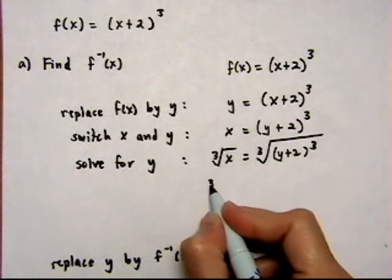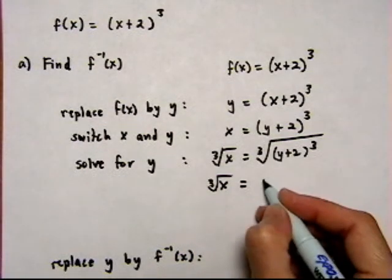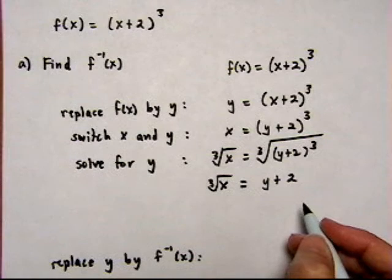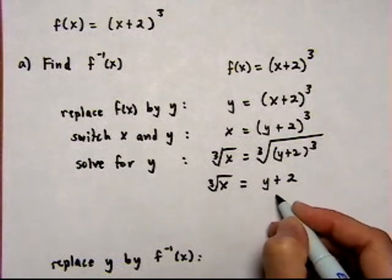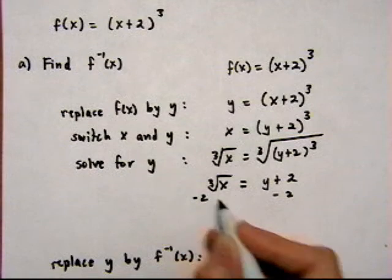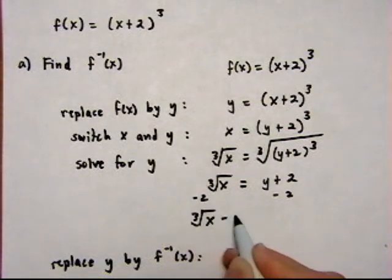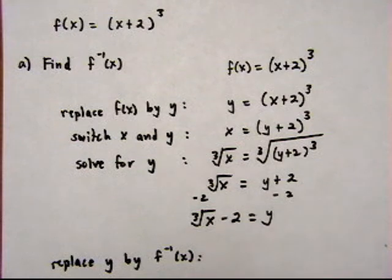And that gives us cube root of x is equal to, and cube root of a cube will just give us the insides, y plus 2. Solving for y still we get subtracting 2 on both sides. And that gives us cube root of x minus 2 is equal to y.